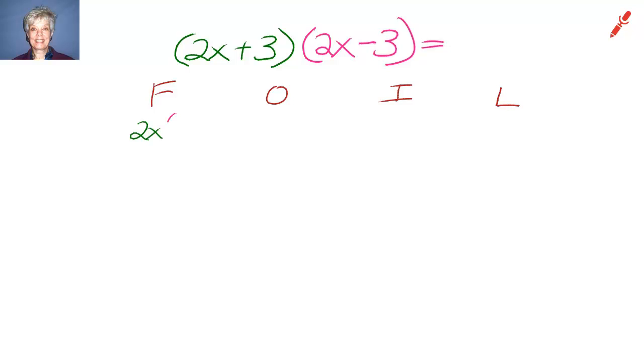So 2x times 2x, 2x times negative 3, 3 times 2x, and 3 times negative 3, and I add those terms.